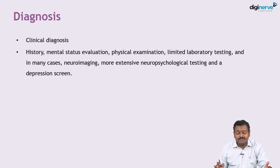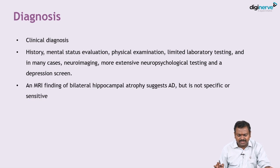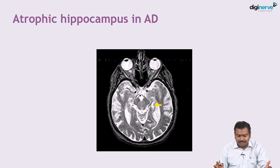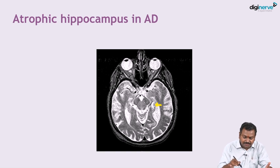The diagnosis of Alzheimer's disease is predominantly clinical, based on history, mental state evaluation, physical examination, limited laboratory testing, and in many cases neuroimaging. A depression screen should be done in most patients. MRI may show bilateral hippocampal atrophy, but this is neither specific nor sensitive for Alzheimer's. Important blood tests include complete blood count, electrolytes, glucose, blood urea nitrogen, creatinine, serum B12, TSH, and liver function tests to rule out other treatable causes of dementia.